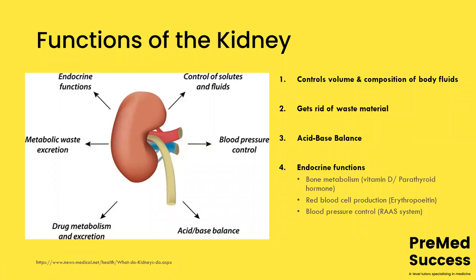The functions of the kidney you need to know for A-level are: control of solutes and fluids — the volume, composition of body fluids — and metabolic waste excretion. Drug metabolism and acid-base balance aren't really tested. Blood pressure control you need awareness of but not in great detail. The kidney also does bone metabolism, helps with red blood cell production, and acid-base balance. Those are the overview of the roles and functions of the kidney.